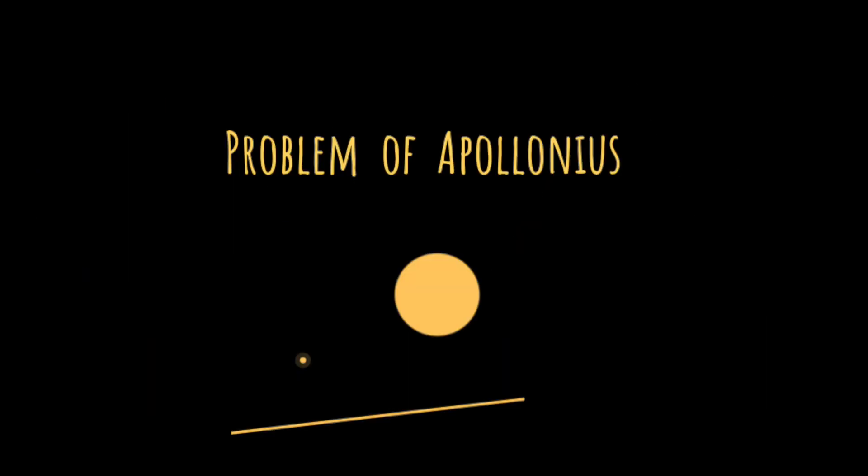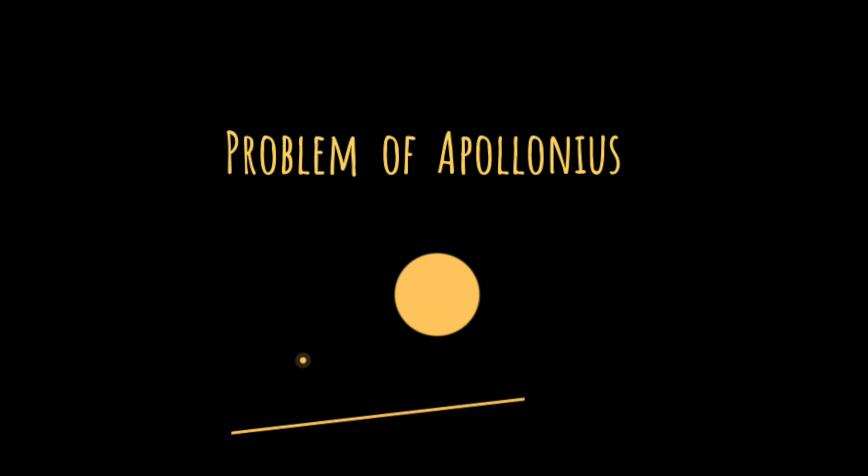Apollonius is also known for his work on finding circles tangent to a given set of points, lines, and circles. This is now called the problem of Apollonius, and its full statement goes as follows. Construct a circle tangent to three given objects in a plane, where an object may be a line, a point, or a circle, or any combination of those.